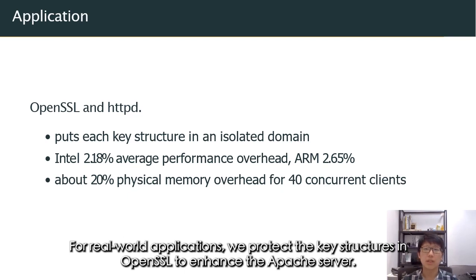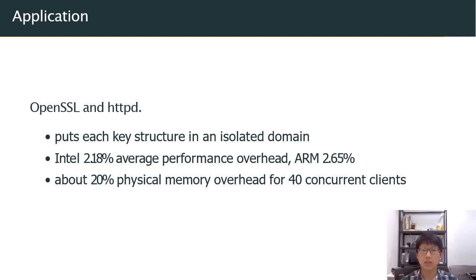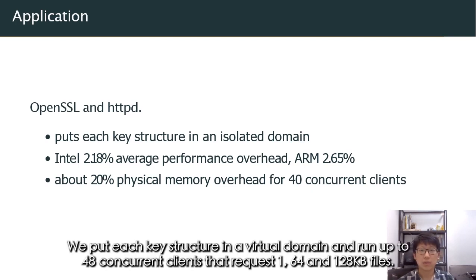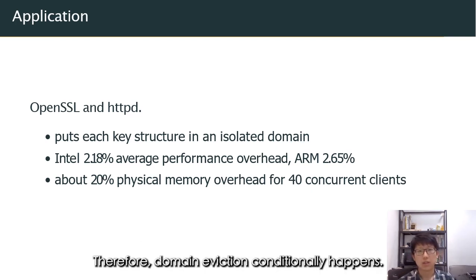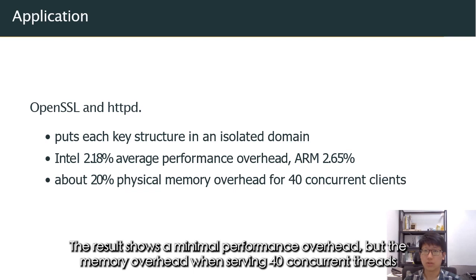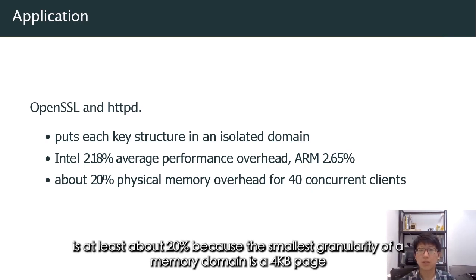For real-world applications, we protect key structures in OpenSSL to enhance the Apache server. Specifically, we put each key structure in a virtual domain and run up to 48 concurrent clients requesting files of different sizes. We observe that some functions in OpenSSL access more than one key simultaneously, so domain eviction conditionally happens. The result shows minimal performance overhead, but memory overhead when serving 40 concurrent threads is at least about 20% because the smallest granularity of a memory domain is a 4KB page.